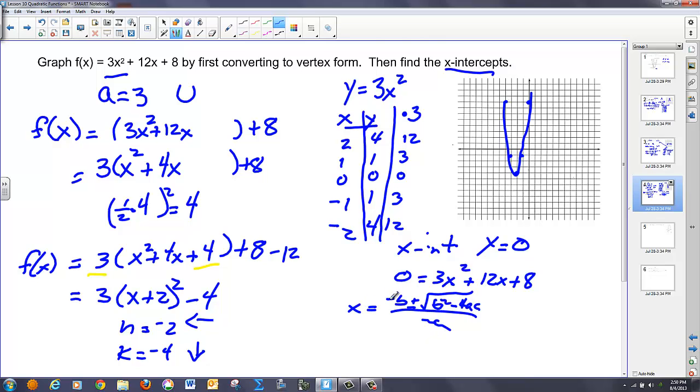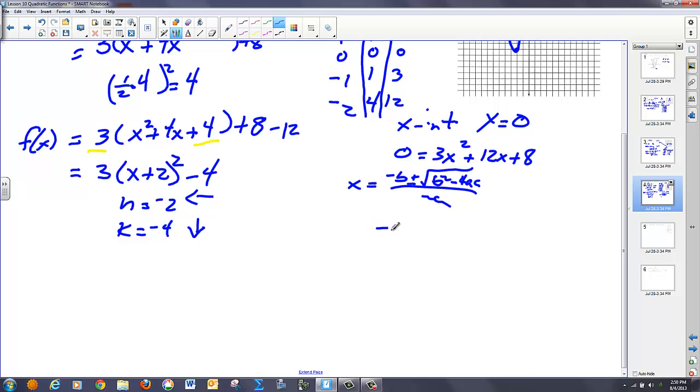So in this case, what I've got is the opposite of 12 plus or minus the square root of 144 (because it's 12²) minus 4(3)(8) over 2(3). So in this case, we have -12 ± √(144 - 96). And 144 - 96 is 48 over 6.